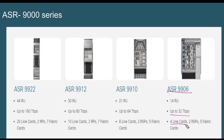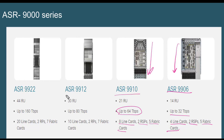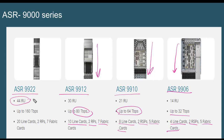The 9900 series represents the more recent versions of the 9000 series. The 9910 has a higher backplane capacity supporting eight cards, two RSPs, and five fabric cards. As you go up the range, you get more supported cards and higher backplane capacity. At the top is the ASR 9922 — the ultimate chassis — taking an entire 44-rack-unit rack with huge capacity and a wide variety of route processors, line cards, and fabric cards.